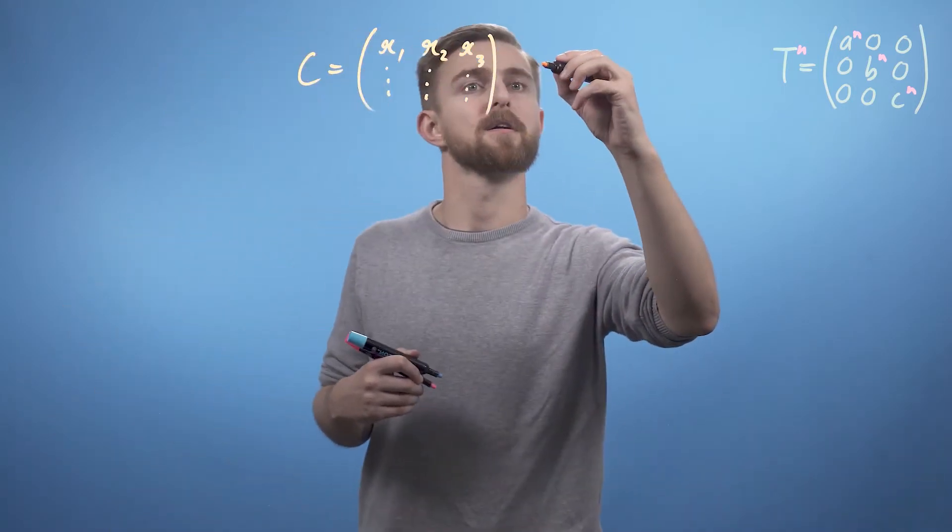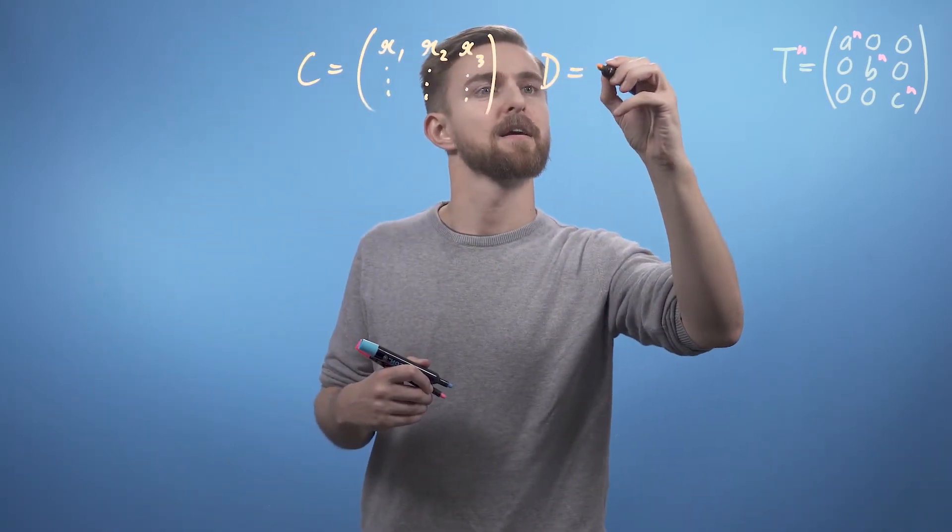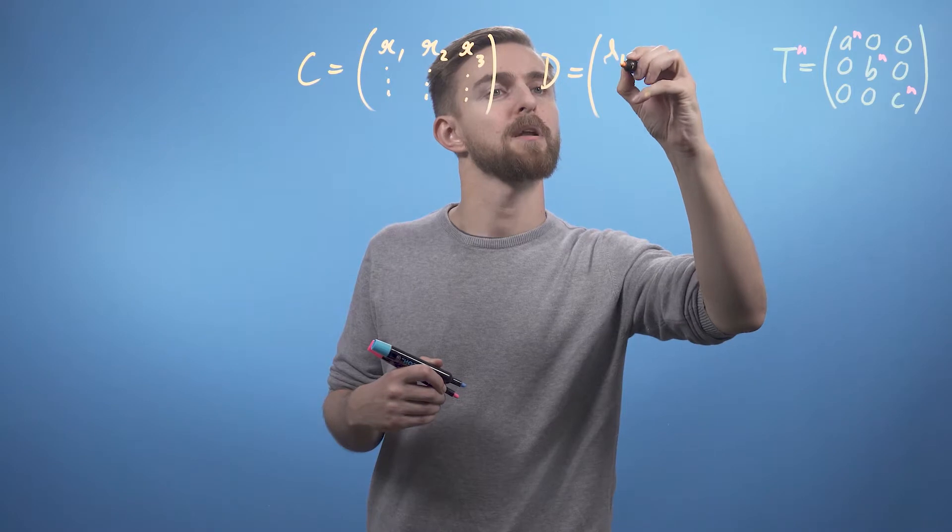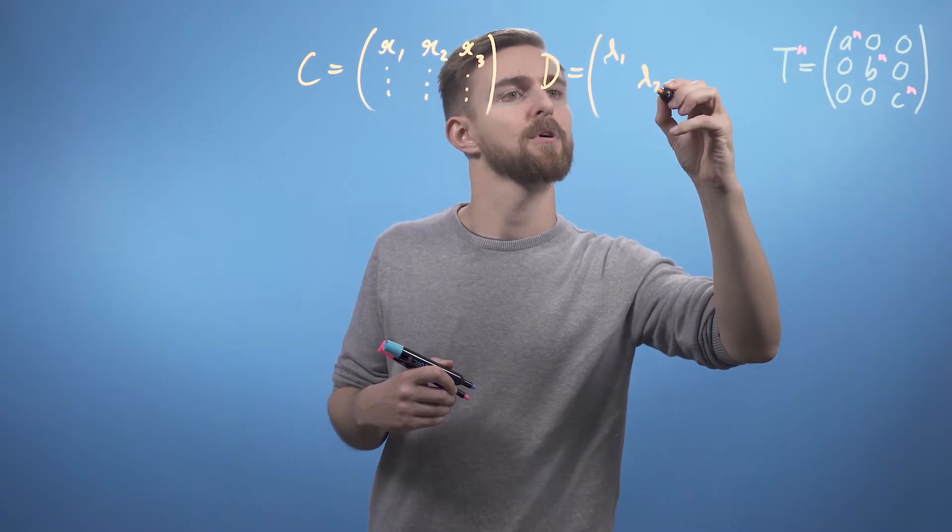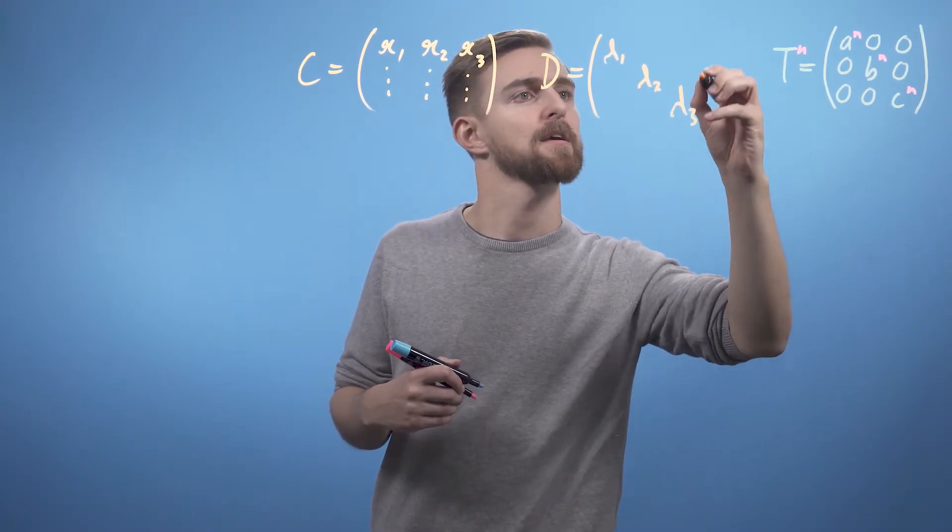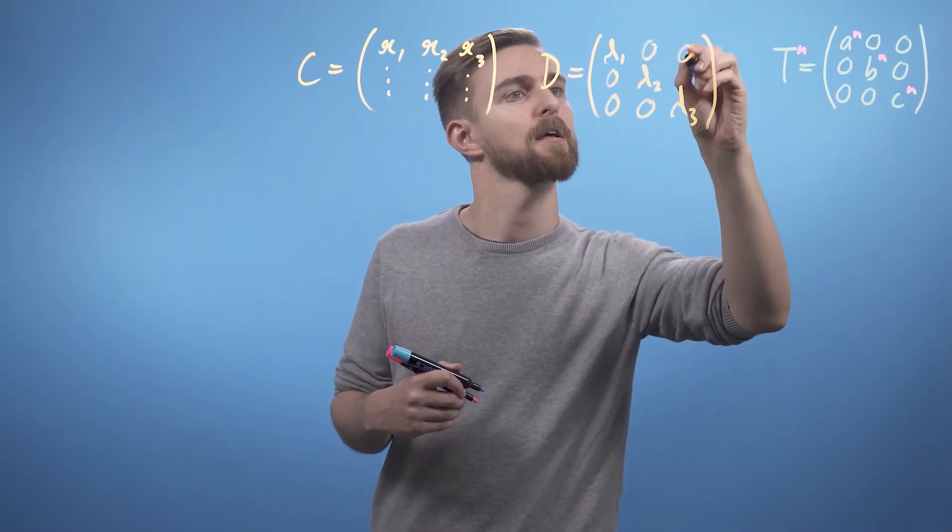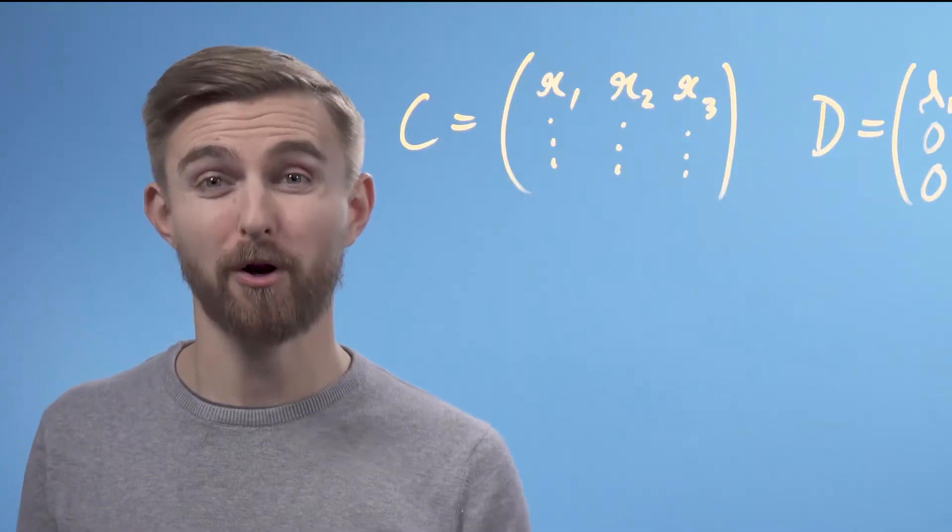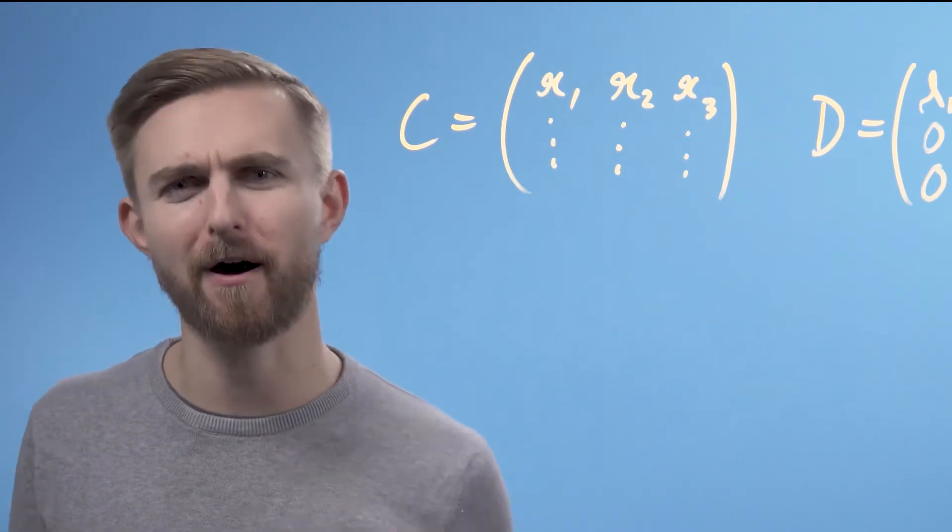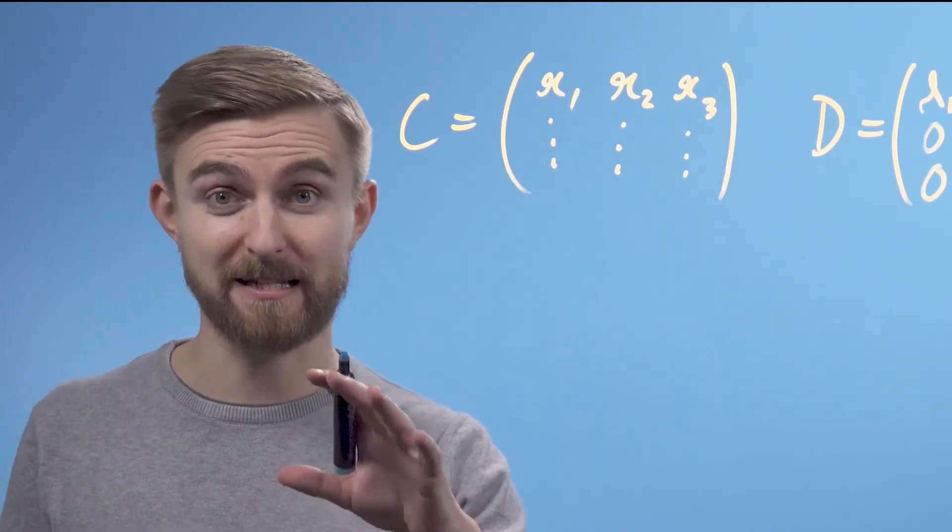So D equals lambda 1, lambda 2, and lambda 3, with zeros elsewhere. We're so close now to unleashing the power of eigen. The final link that we need to see is the following.